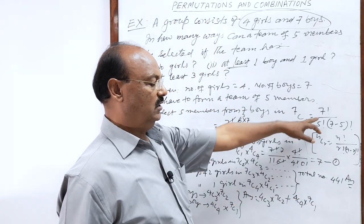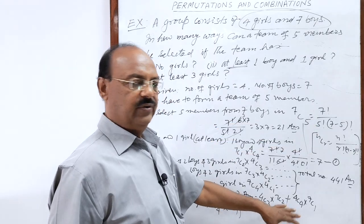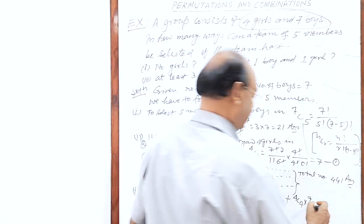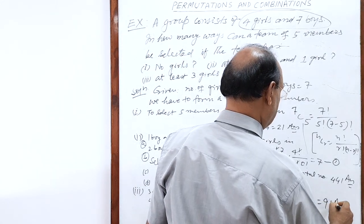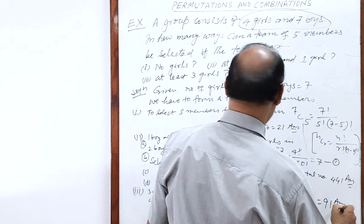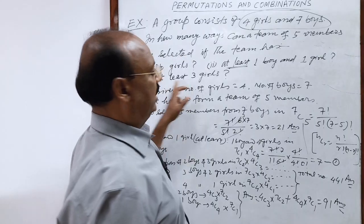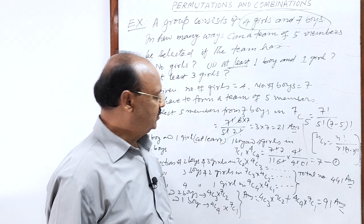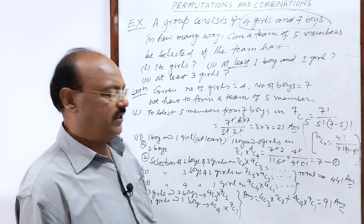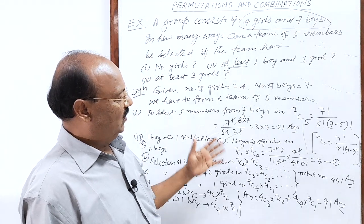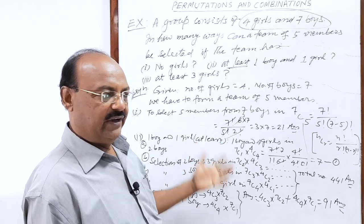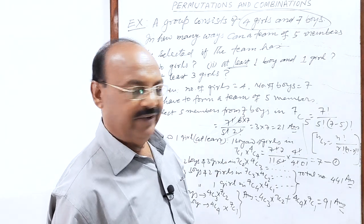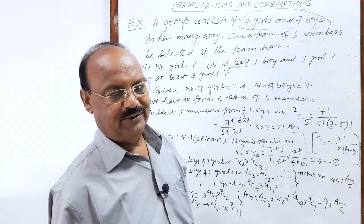Using the formula, you can calculate: four C three into seven C two plus four C four into seven C one, and after calculation you will get this equal to 91. So this is the answer of the third part. This is a very important question — many times these questions are asked in different examinations. Hope you have understood it very well. Thank you very much for watching this video.